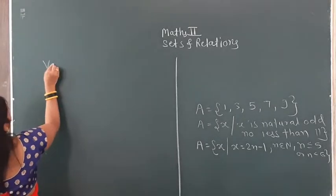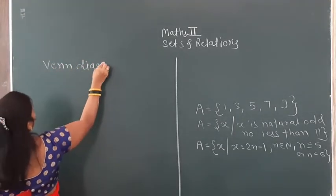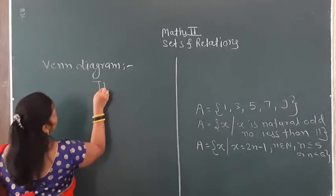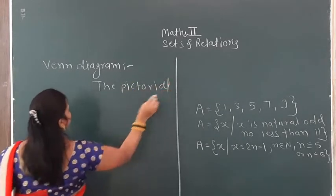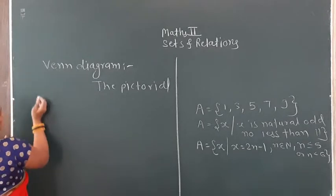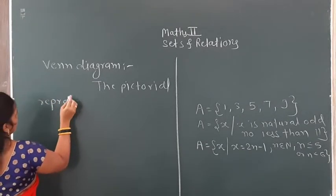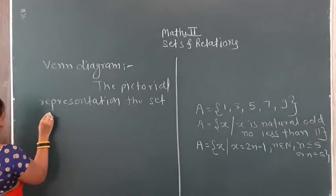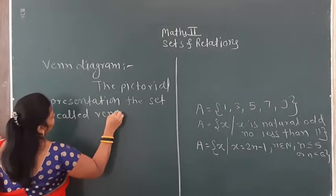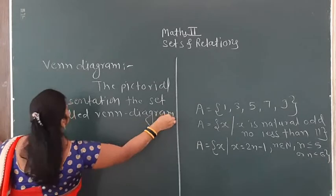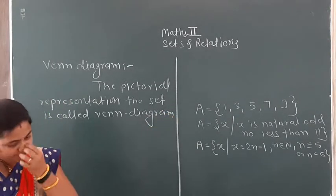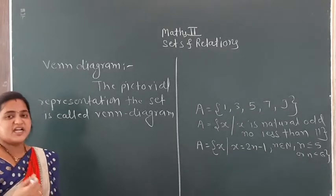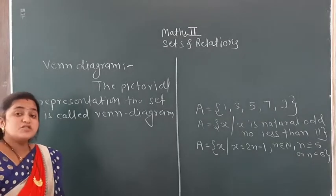Next, the third method is the Venn diagram, which is also important. The Venn diagram is the pictorial representation of a set. It is called a Venn diagram. If you have a set represented in a rectangle, square, circle, or any closed figure.